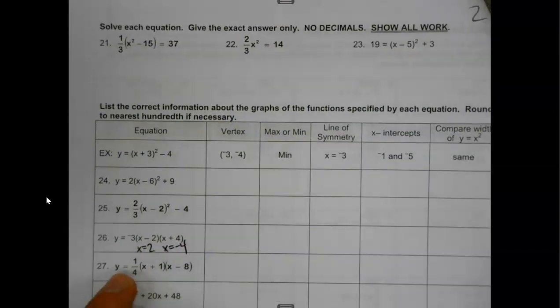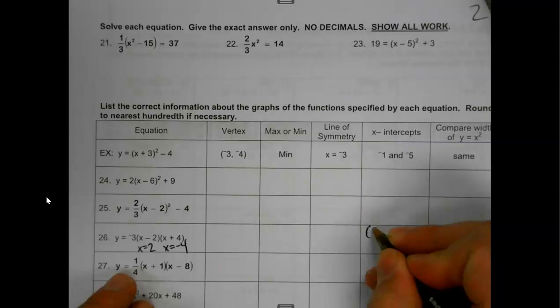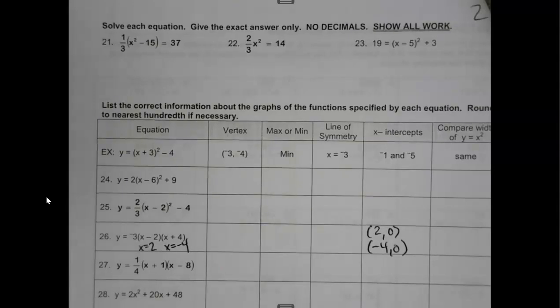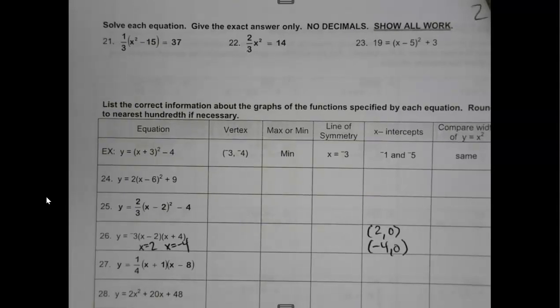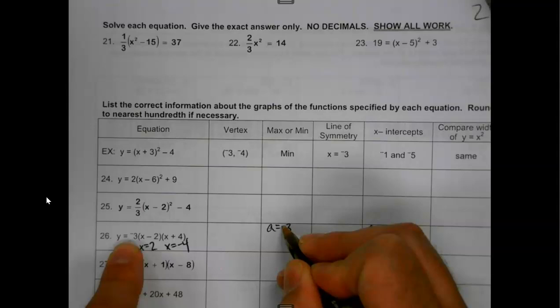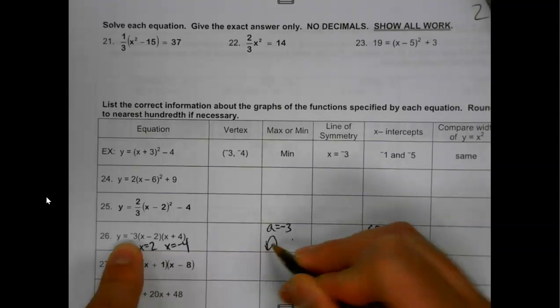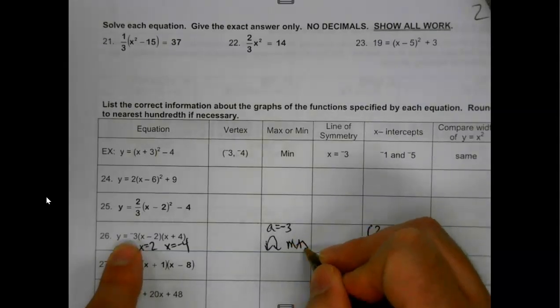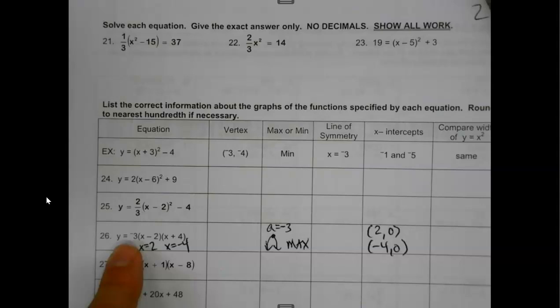Y'all are like, Hardy, where you at? Page 2 on the practice. So, 2, 0, negative 4, 0. Now, this other stuff, do I know yet? I could. Max or min. My a value is negative 3. Which means my parabola is opening down before I ever look at anything. So, that would be a max.